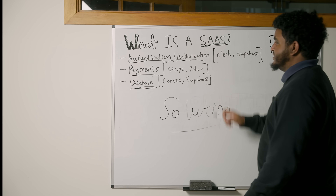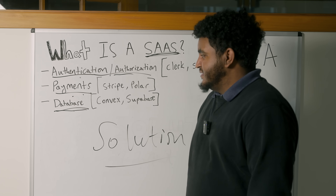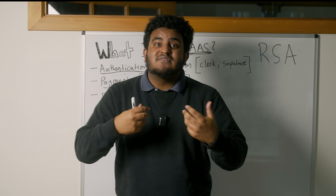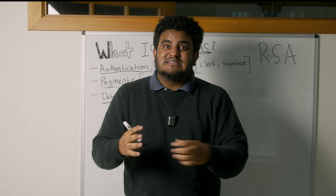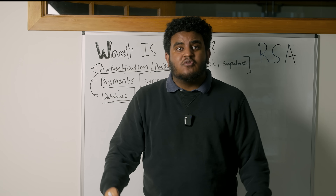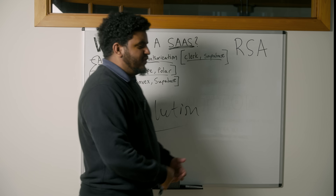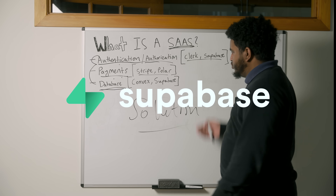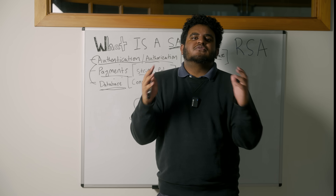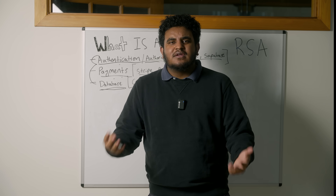So in order to have a SaaS, I need authentication and authorization, I need payments, and I need a database. And if you're not a developer — which if you're watching this, you're probably not — it is fricking hard. Even as a developer myself, it takes time to set up a robust system. You've probably heard of service providers like Supabase, Stripe, Clerk, Convex. These providers do a lot of the hard work, but even setting them up and putting them together is difficult for a non-developer.